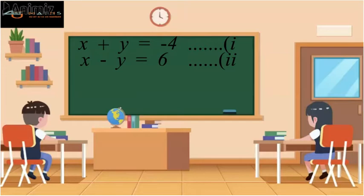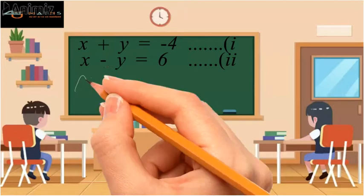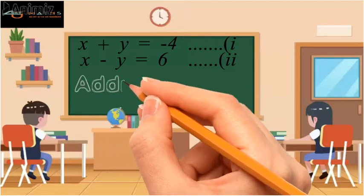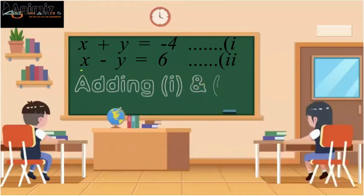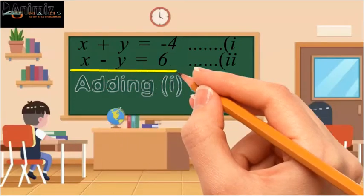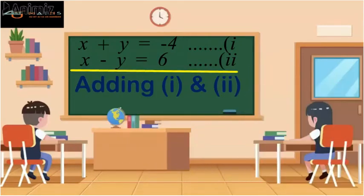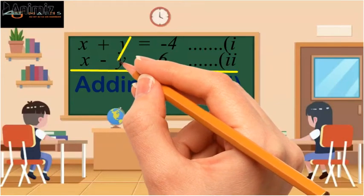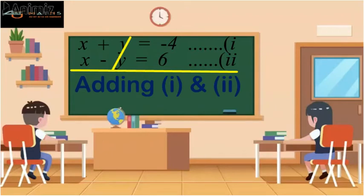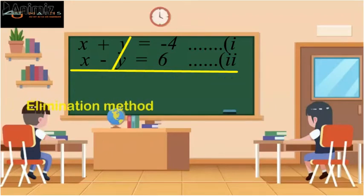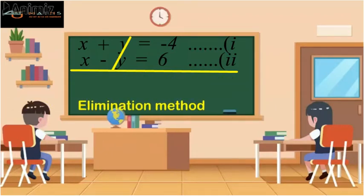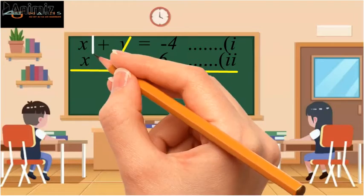We will make use of the elimination method. So by adding equation 1 with equation 2, we will cancel y with negative y because one is positive and the other is negative. So this is what we call the elimination method — we are eliminating y.